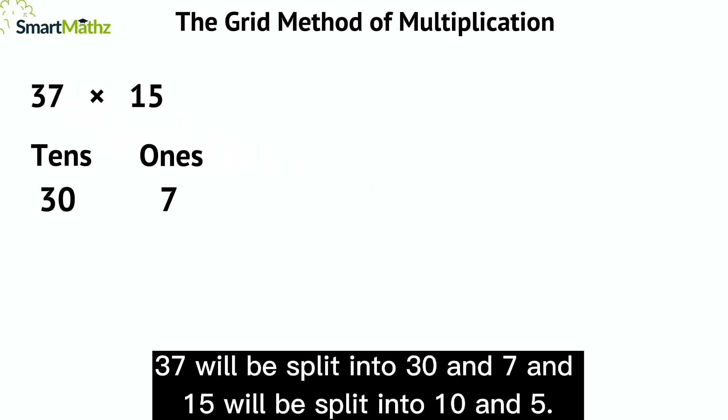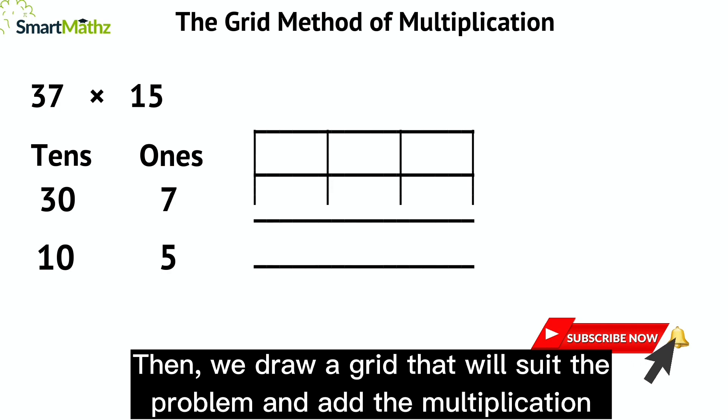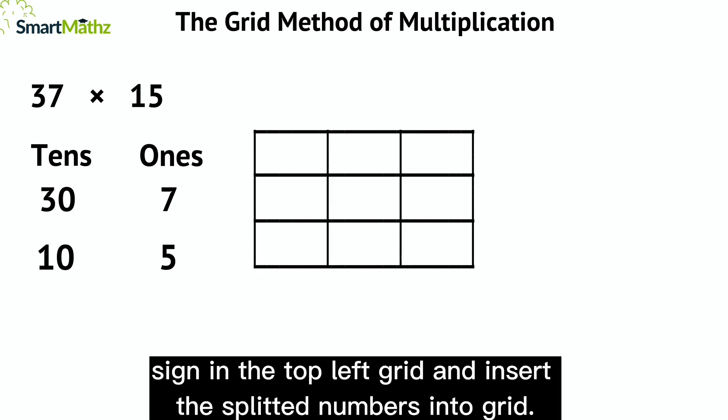37 will be split into 30 and 7, and 15 will be split into 10 and 5. Then we draw a grid that will suit the problem and add the multiplication sign in the top left grid and insert the split numbers into the grid.